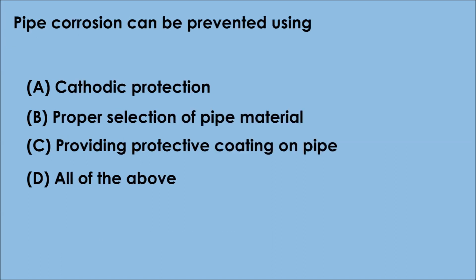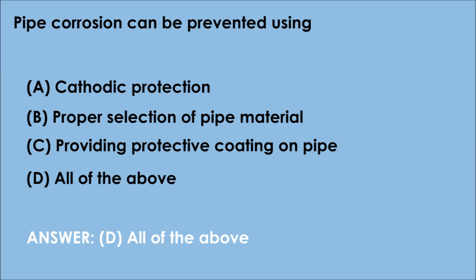Question 7. Pipe corrosion can be prevented using: A. Cathodic protection, B. Proper selection of pipe material, C. Providing protective coating on pipe, D. All of the above. The correct answer is option D — all of the above. Pipe corrosion can be prevented using cathodic protection, proper selection of pipe material, and providing a protective coating on the pipe.